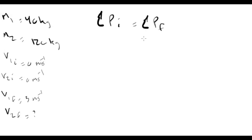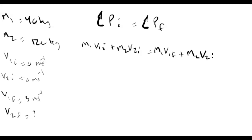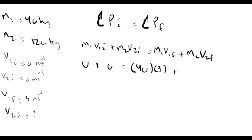Expanding the conservation of momentum equation for two objects, everything on the left side is 0. So: 0 = 40×3 + 120×V2f, which gives 0 = 120 + 120·V2f. Therefore V2f = −1 meter per second. This means skater two moves in the opposite direction at 1 m/s.